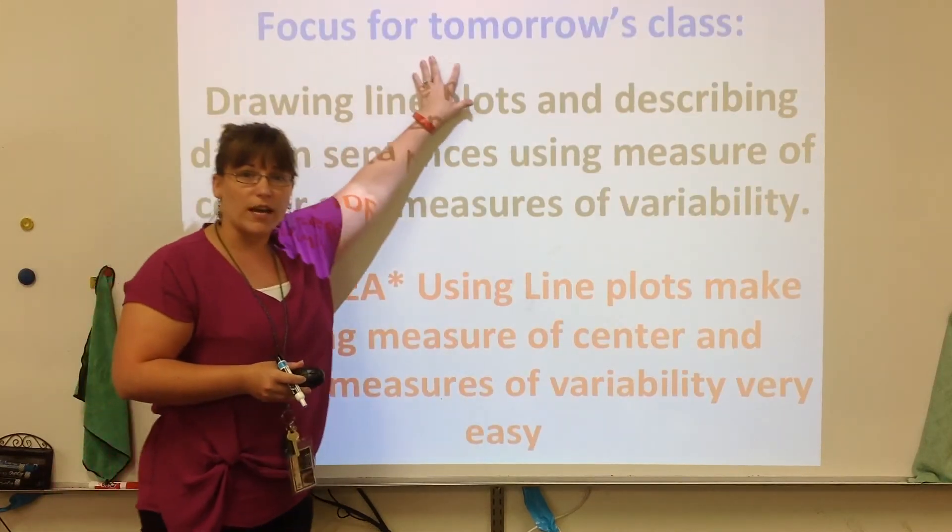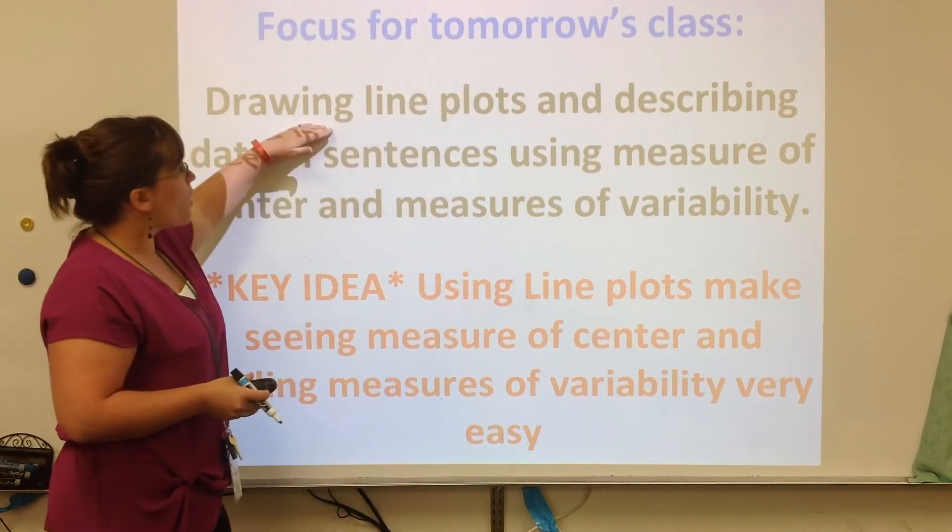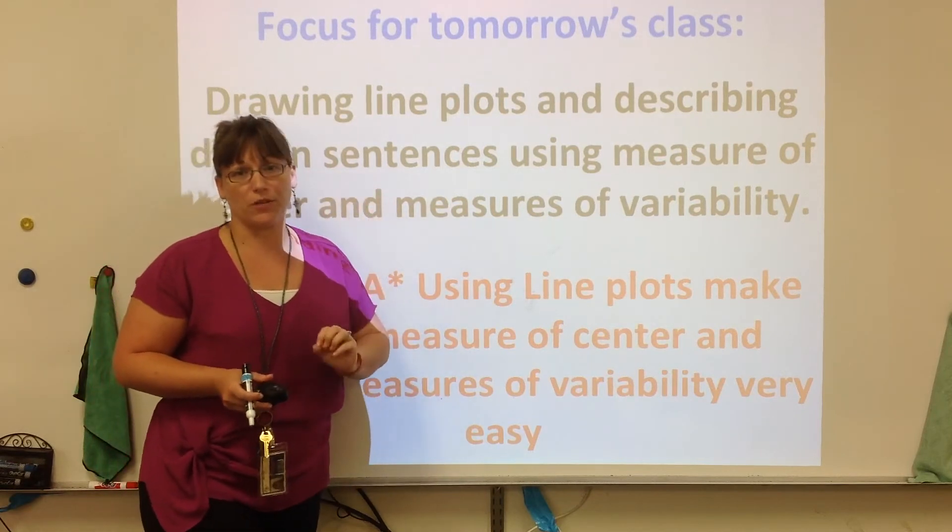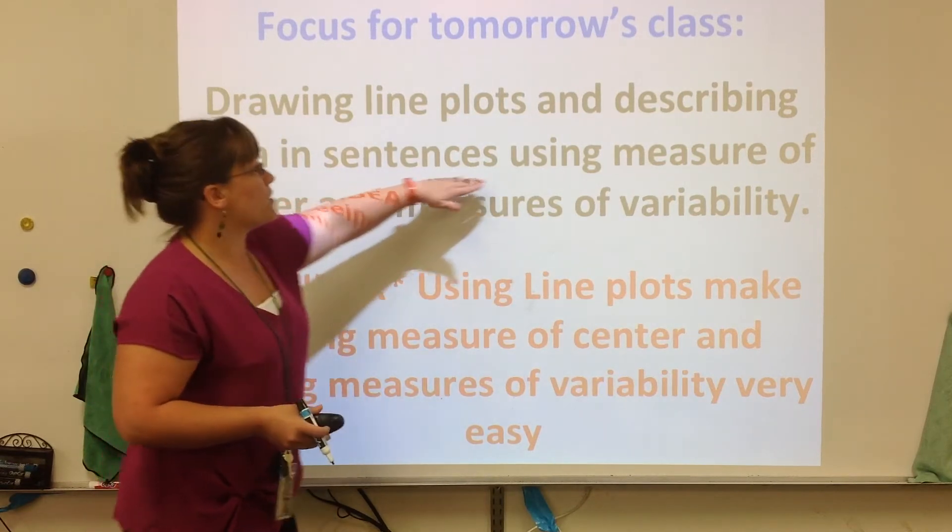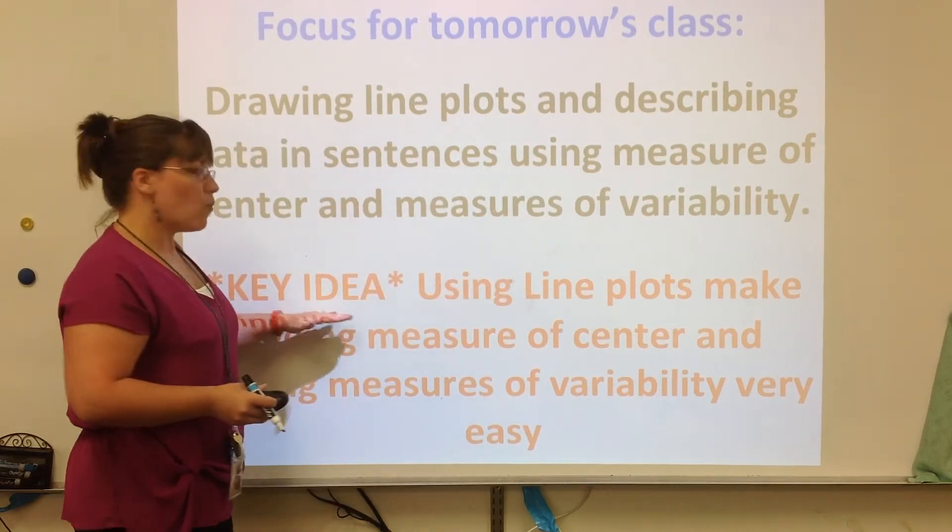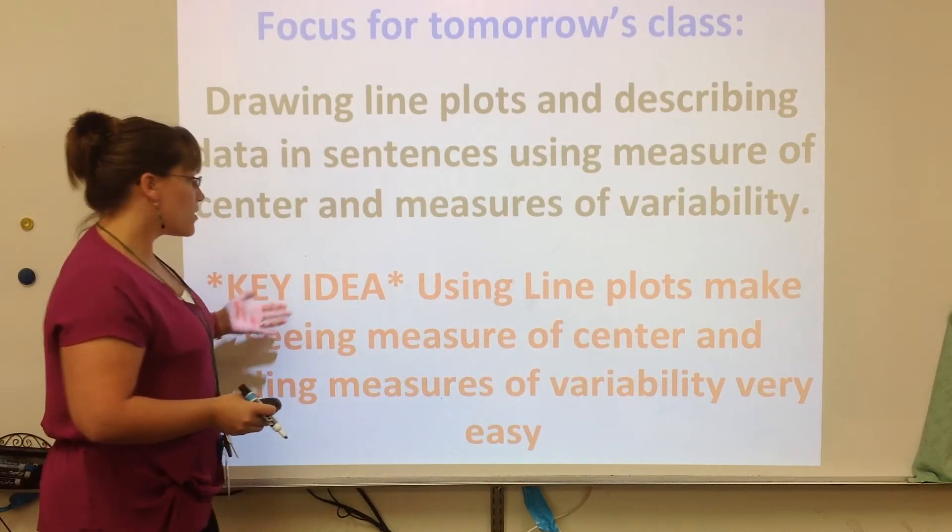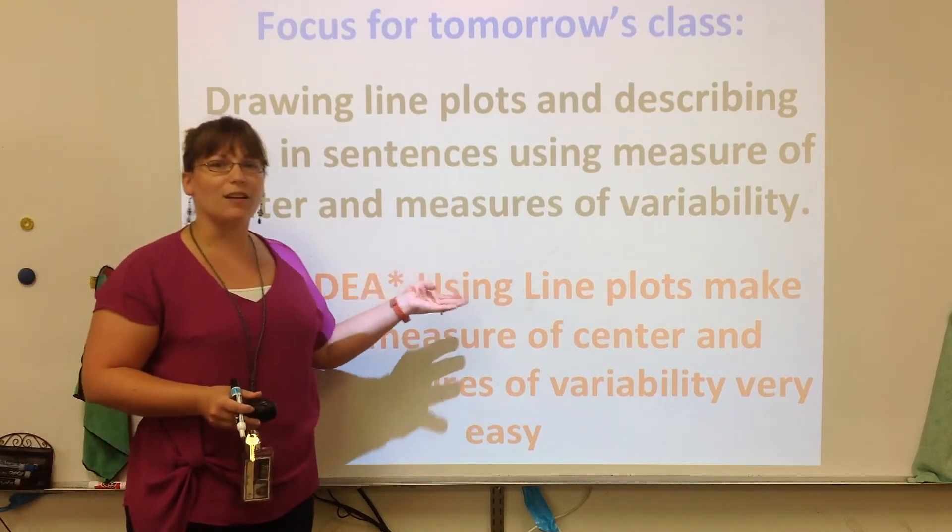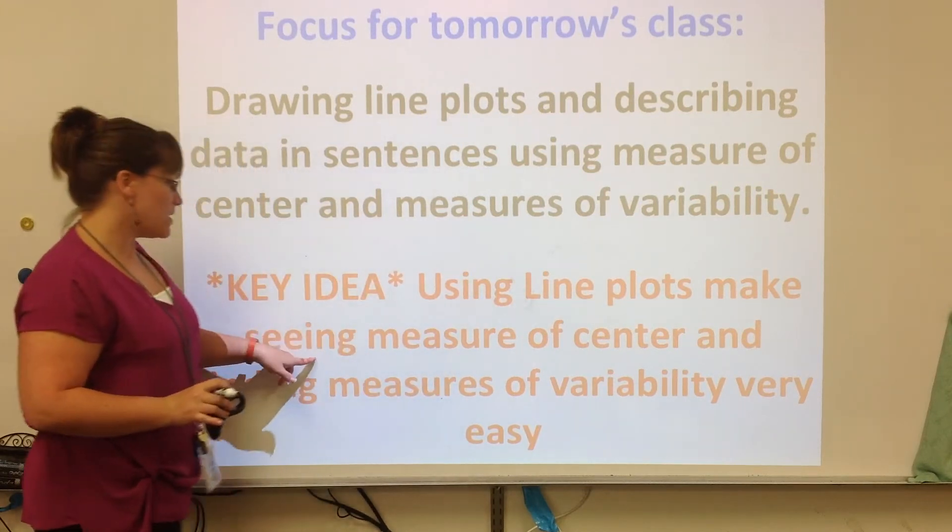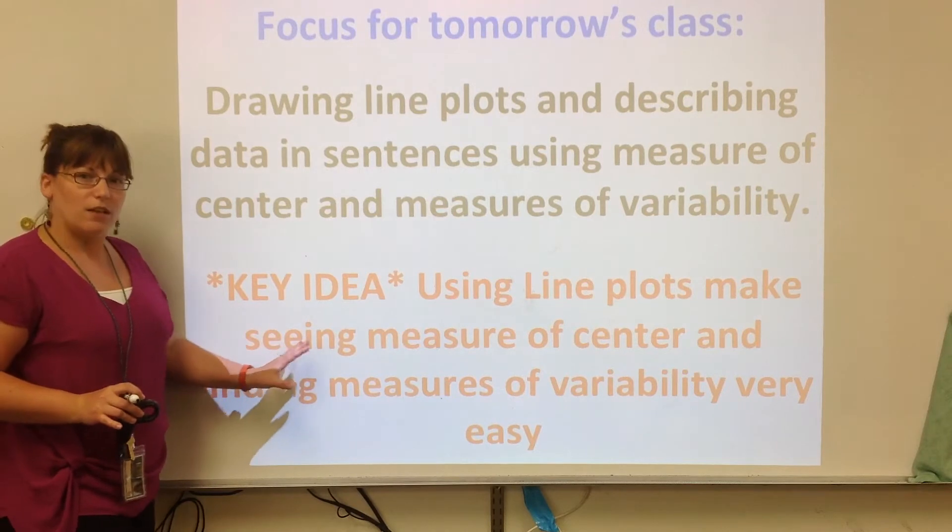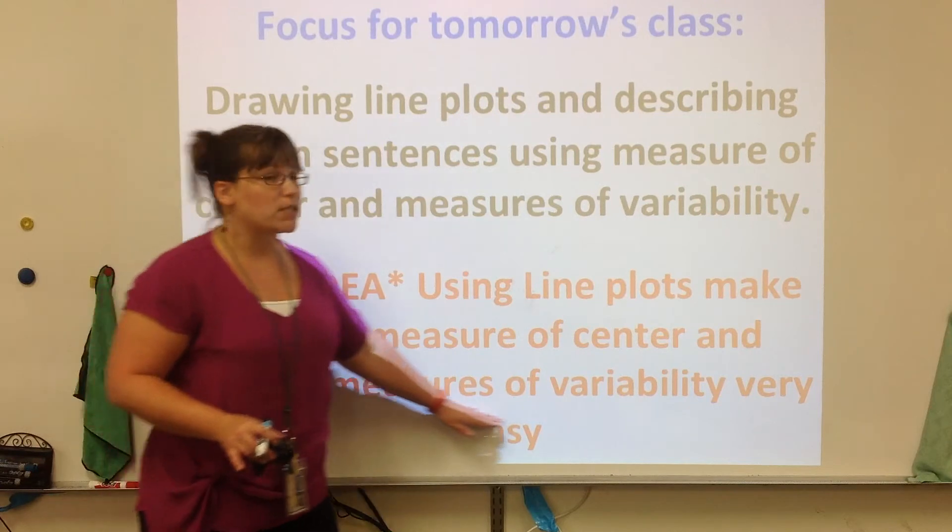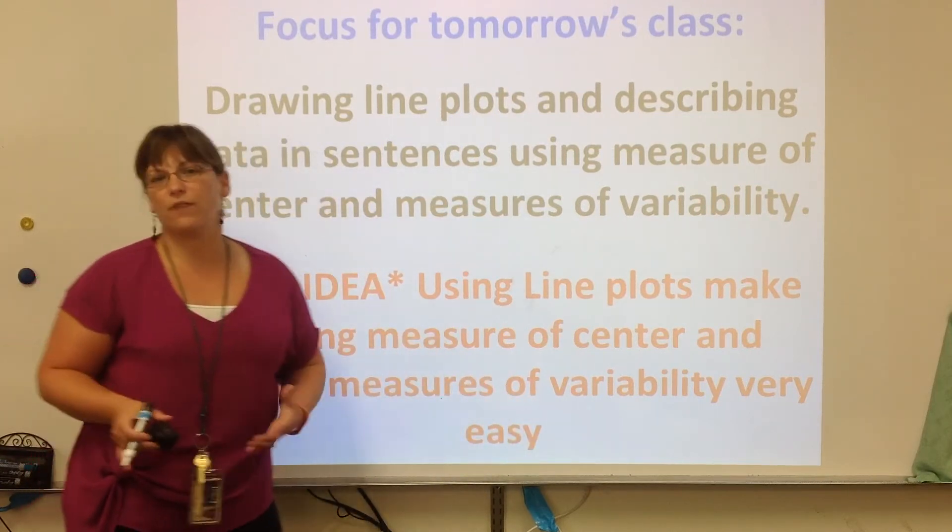So the focus of tomorrow's class, like I said, we're going to draw line plots like we did in our notes, and we're going to describe data in sentences. This is the part I want to do an example with, because we're going to be using the measures of center and the measures of variability. Why bother? What's the key idea? We're going to use line plots, because the line plots is already a nice visual. It's already in order. It makes finding measures of center and seeing the measures of variability easier. And if we want to see if there's an outlier, that's very clear as well.